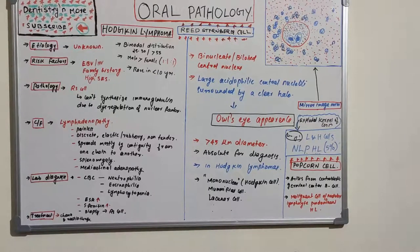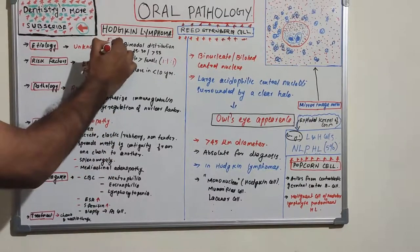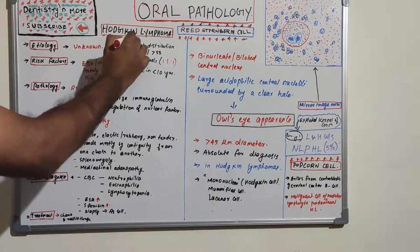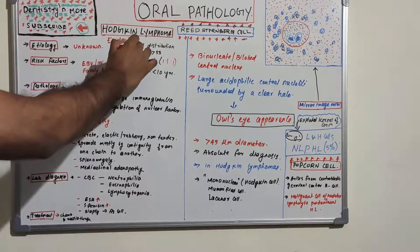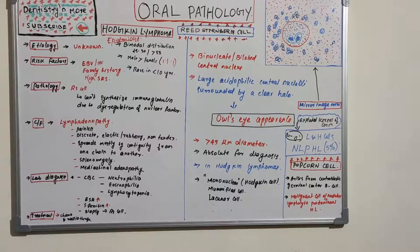The etiology of Hodgkin's lymphoma is commonly unknown. Regarding epidemiology, it follows a bimodal distribution, meaning the incidence of the disease peaks in two age groups.